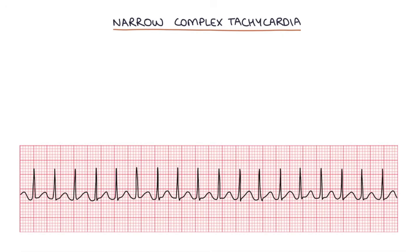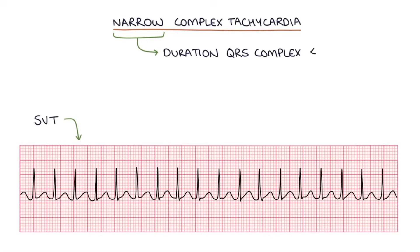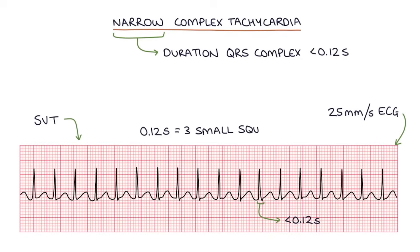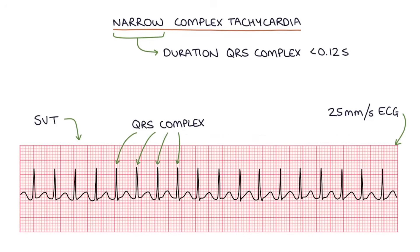SVT typically causes a narrow complex tachycardia, meaning the duration of the QRS complex is less than 0.12 seconds. On a normal 25mm per second ECG, 0.12 seconds equates to three small squares, so the QRS complex in SVT will fit within three small squares. On an ECG, SVT looks like a QRS complex followed immediately by a T wave, then another QRS complex, then a T wave, and so on.